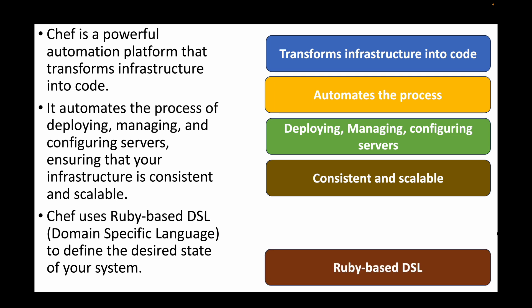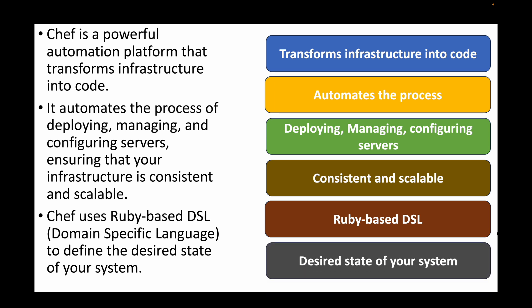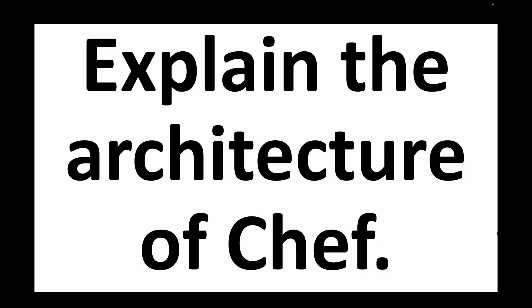Chef uses a Ruby-based DSL — Domain Specific Language — which helps us define the desired state we want on the remote machine. Essentially, the scripts we write in Chef are Ruby-based scripts that describe what exactly you want to do on the remote machine.